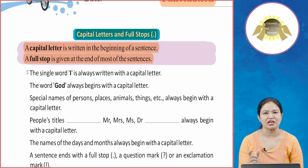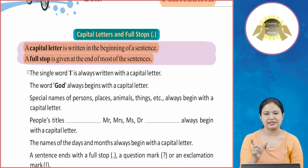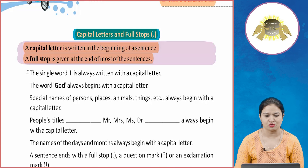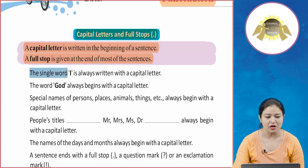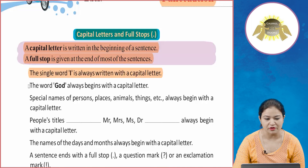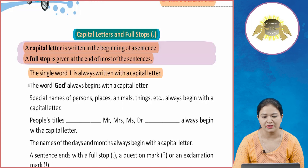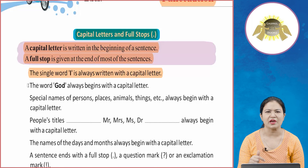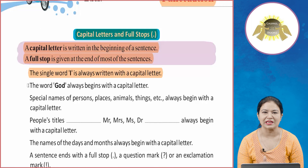We use a full stop after a sentence or a complete statement. The word 'I' is always written with a capital letter. Whenever you use the word 'I', it will always be written in its capital form.